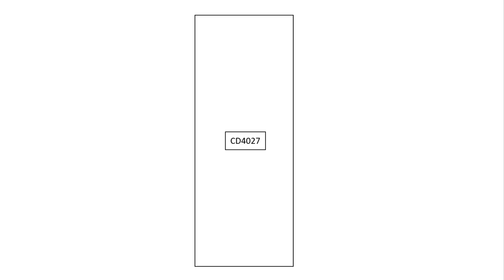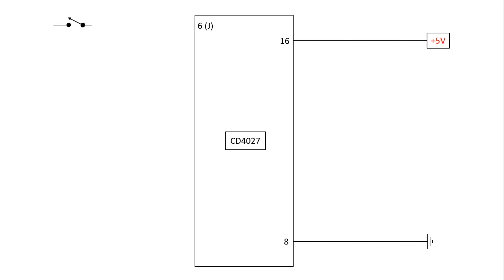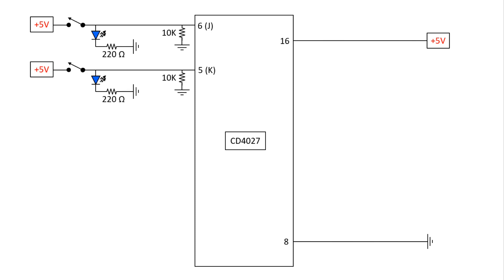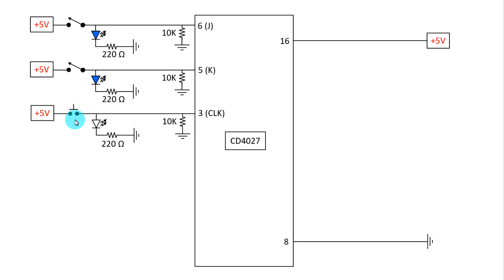Here is the circuit diagram with the IC CD4027. Pin 16 is connected to 5 volts and pin 8 is connected to ground. Pin number 6 is J, and we will provide signals with a switch — one pin of the switch is connected to pin 6, the other pin to plus 5 volts. Since this is a digital IC, we have to connect a pull-down resistor of 10 kilo ohms with the input pins. To indicate switch state, an LED with a 220 ohm resistor is connected to ground. The same connection is done for K. For the clock pulse, the connection is the same but using a push-button switch, and a 0.1 microfarad capacitor is connected across the switch for debouncing.